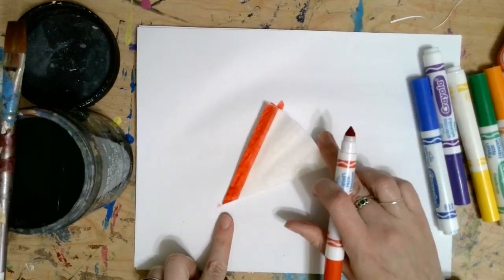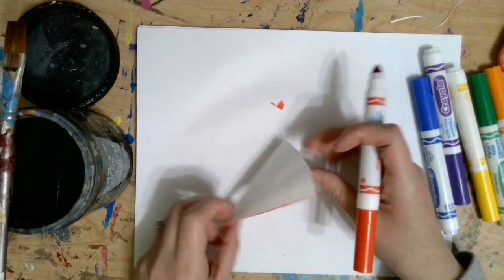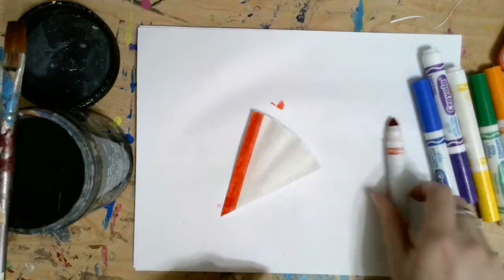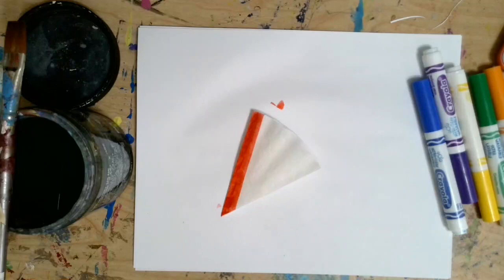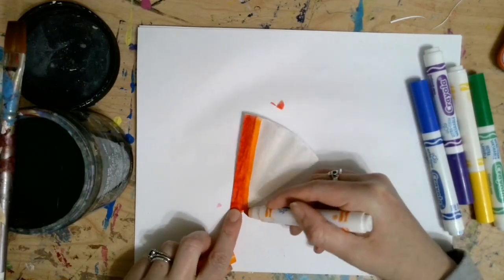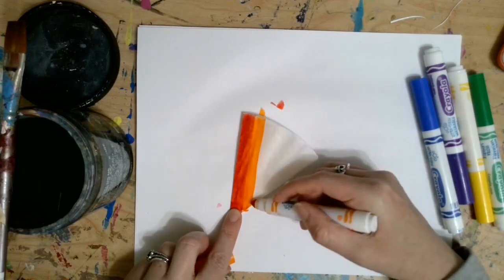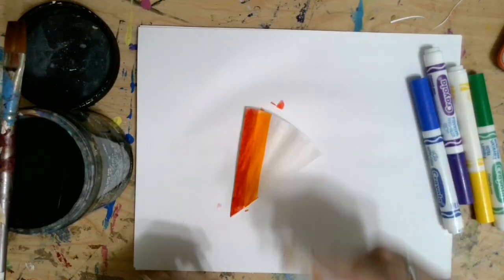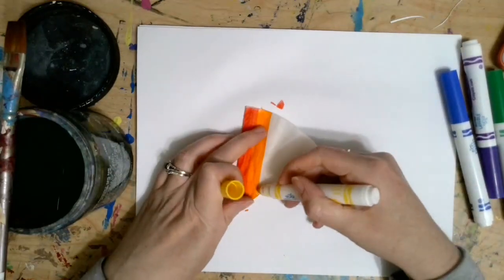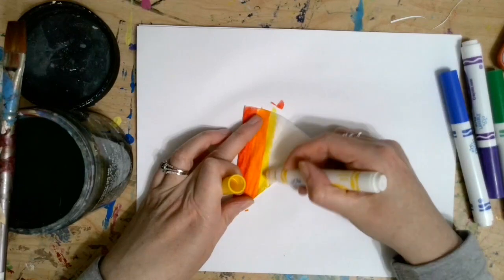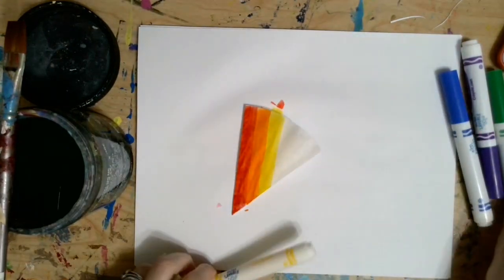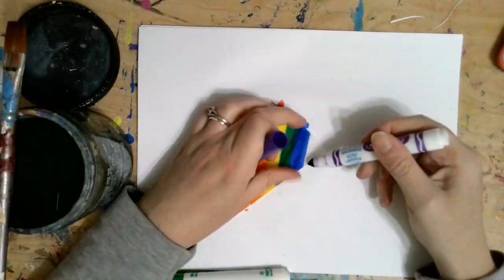We're only coloring one side of our coffee filter. So I'm not coloring the back or the inside pieces. We're just coloring the top. Now I'm going to do stripes, but if you wanted to, you could do polka dots, you could do zigzags, you could do almost like decorating an Easter egg. It's really up to you.